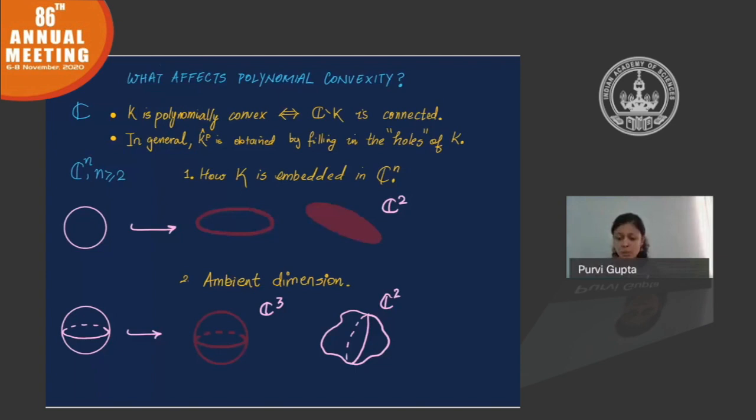However, I can never do that inside the two dimensional complex space. If I take any sort of a sphere, I'm taking some sort of an embedding, it will always have a hull. And in many cases, we also understand the hull. It's going to be a three dimensional ball.